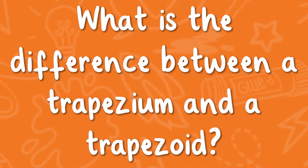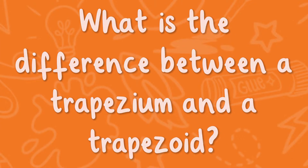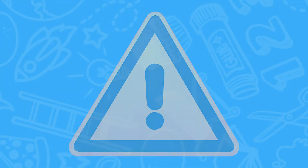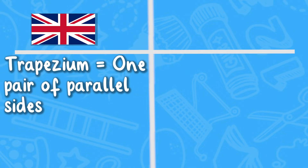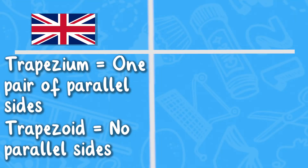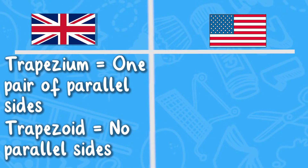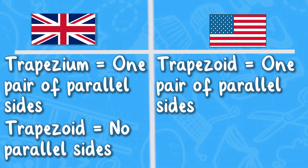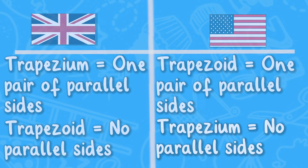What's the difference between a trapezium and a trapezoid? You need to be careful here. In the UK, a trapezium is a quadrilateral with one pair of parallel sides, whereas a trapezoid has no parallel sides. However, the USA uses these words for the opposite definitions — a USA trapezoid has one pair of parallel lines, whereas a USA trapezium has no parallel lines.